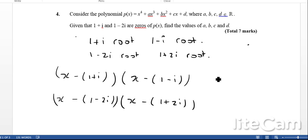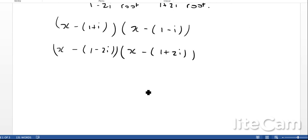If we take them two at a time, it probably makes it slightly easier. Let's multiply out that first double bracket. We should end up with x²-2x+2, and this one should end up with x²-2x+5.